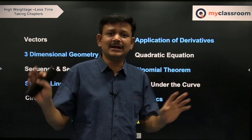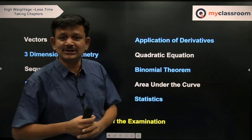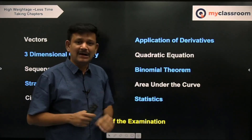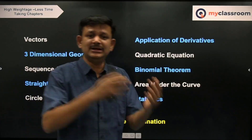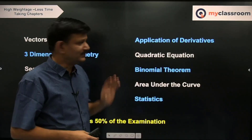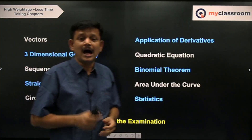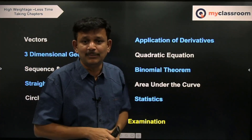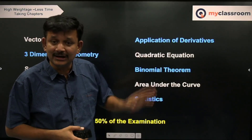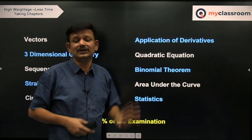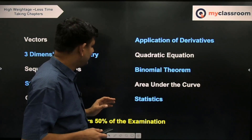Rolle's theorem and Lagrange's theorem don't have many questions in objective pattern. However, there are 4 or 5 questions asked in both JEE Main and JEE Advanced — go through those and that will suffice for mean value theorems. Application of the intermediate value theorem — how many roots, proving there is exactly one root — those questions are asked very regularly, so spend some time on it. This completes the universe of Application of Derivatives.